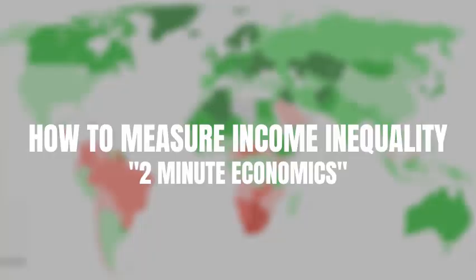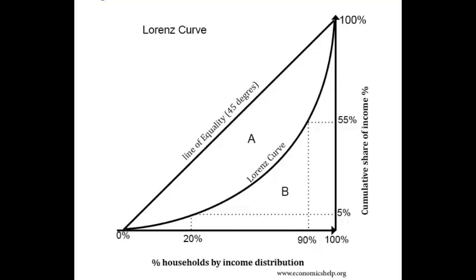The Gini coefficient can be found from the Lorenz curve and the line of equality. To draw the line of equality, we draw a 45-degree angle from the x-axis to the y-axis. Using the formula A divided by A plus B, where area A is the region between the line of equality and the Lorenz curve, and B is the area of the triangle formed by the x-axis, y-axis, and the line of equality, economists are able to find the Gini coefficient of societies and countries.